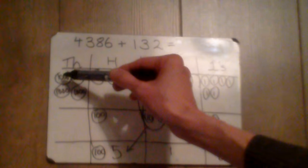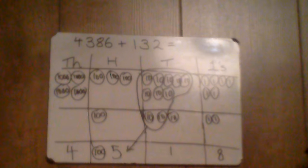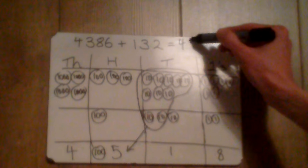In my thousands column I have 1, 2, 3, 4 thousands. So the answer to the sum is 4,518.